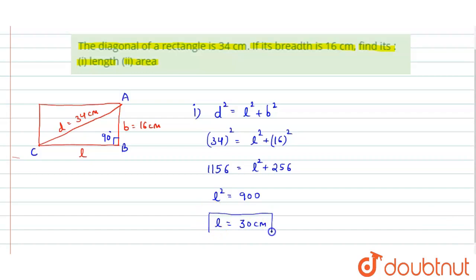This is the length of the rectangle. Now we just need to find the area in the second part. For area, let us use the formula length into breadth. Just put the values of length and breadth: 30 into breadth is 16 cm.